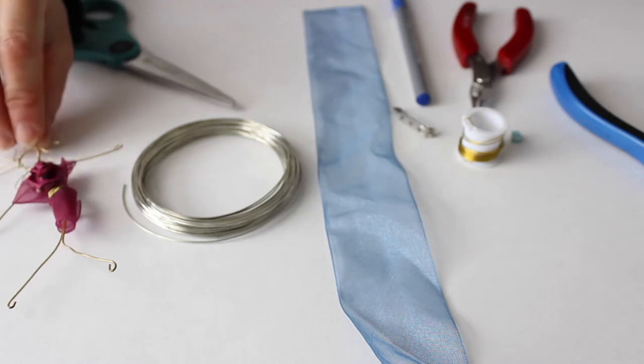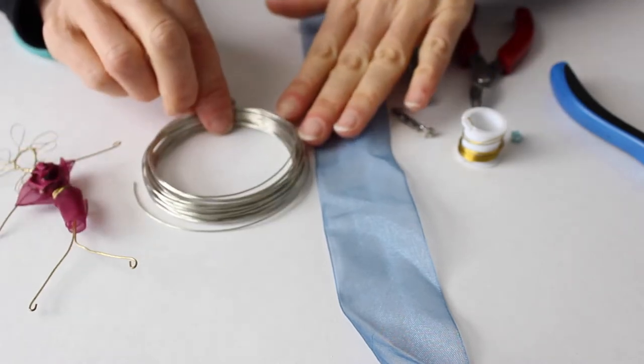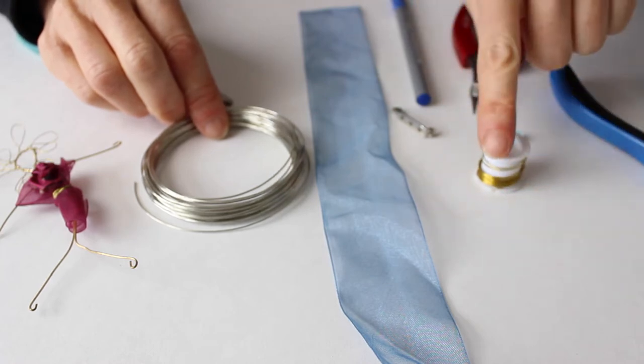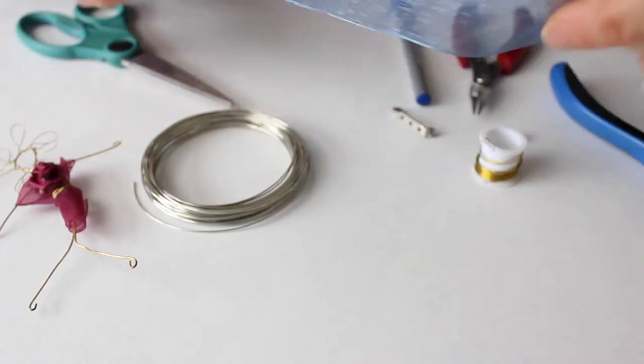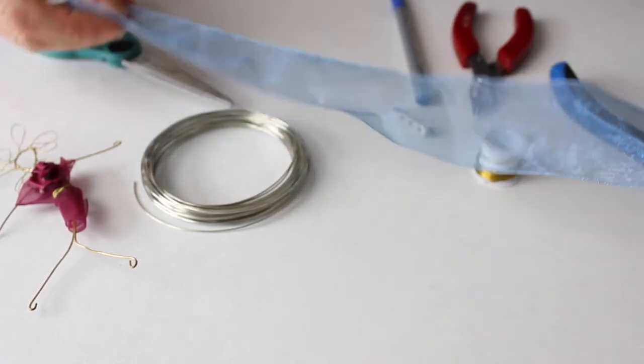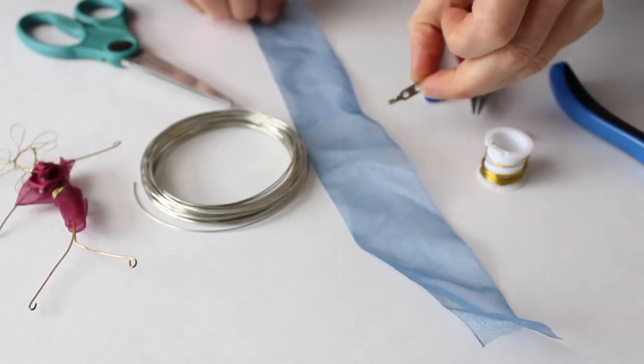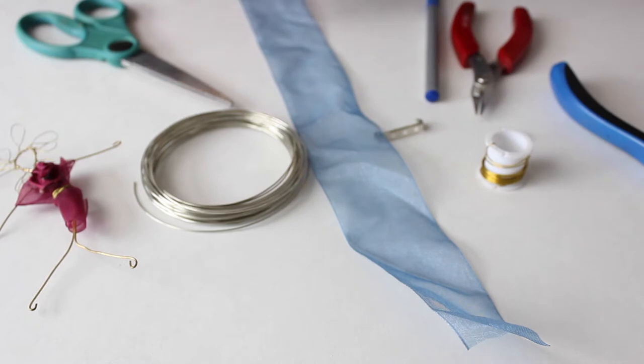To make the little pin we're going to need 20 gauge wire and some thinner 24 gauge wire for the hair, a transparent ribbon about two inches wide by twelve inches long, a little pin to put on the back, and then your tools.